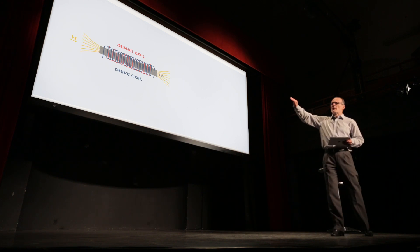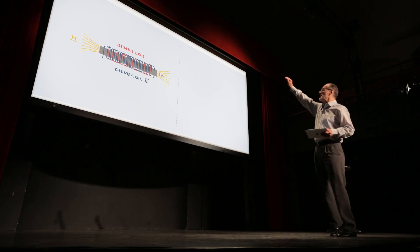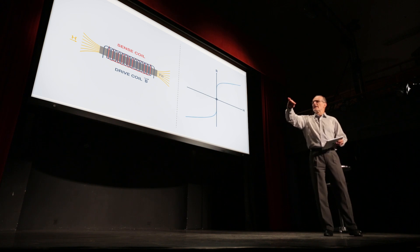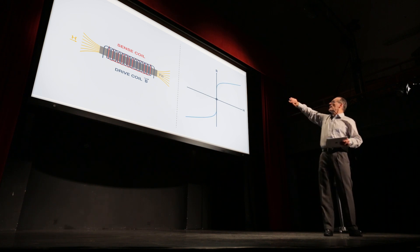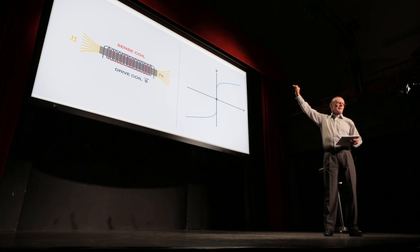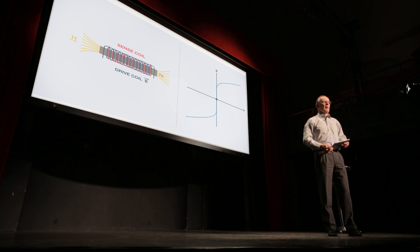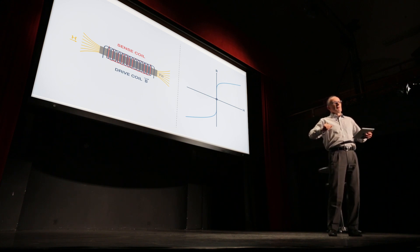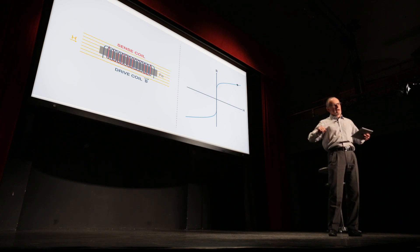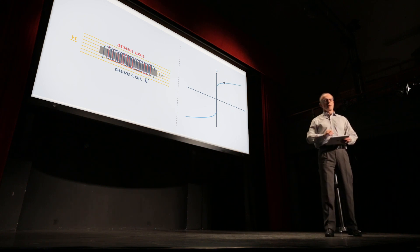So here we see what happens as we go through this hysteresis cycle. As we approach the top, the saturation in the positive direction, all the external flux that is in the iron is driven out.